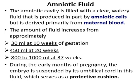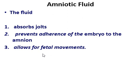During the early months of pregnancy, the embryo is suspended by its umbilical cord in this fluid, which serves as a protective cushion. The functions of the amniotic fluid are: it absorbs jolts; it prevents adherence of the embryo to the amnion; and it allows for fetal movements.